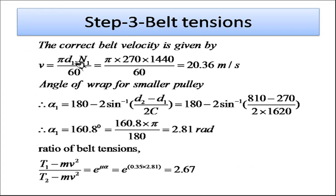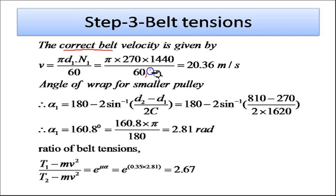Since we rounded the pulley diameters, the velocity will change slightly. We find the corrected belt velocity using the new d1: v = π × 270 × 1440 / 60,000 to get velocity in meter per second. Then we determine the angle of wrap for the smaller pulley.